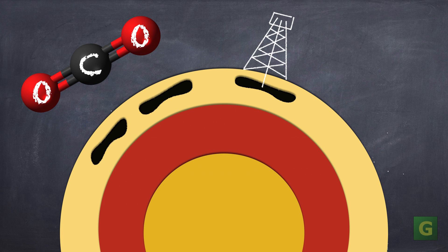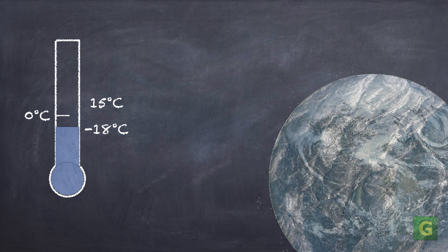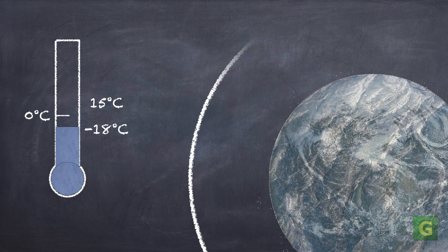Without the greenhouse effect, our planet would have an average temperature of minus 18 degrees Celsius, but with it, we enjoy a relatively comfortable 15 degrees average temperature.